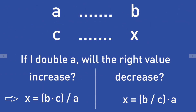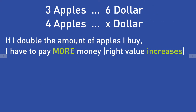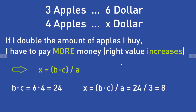So we use this formula: the unknown value X is given by B times C divided by A. We have to first multiply B and C, so 6 times 4, which is B times C.